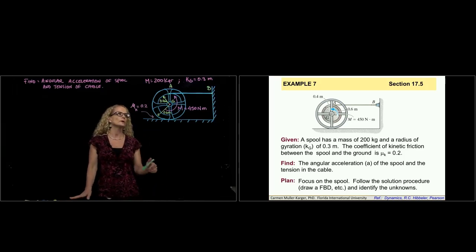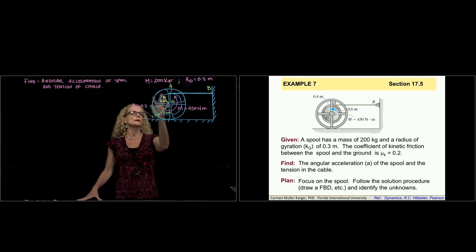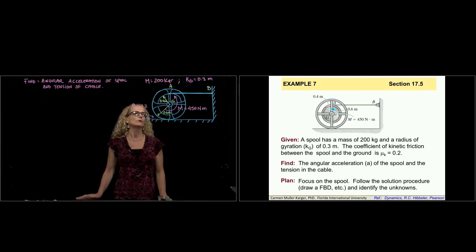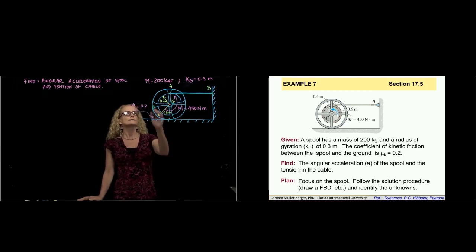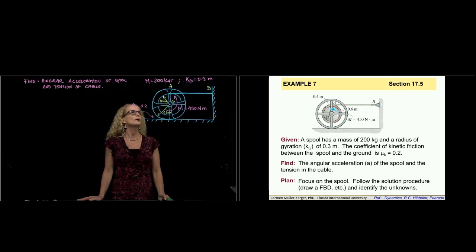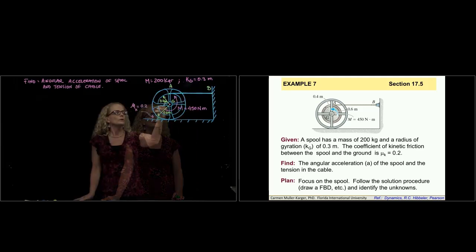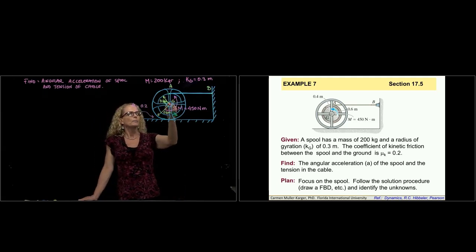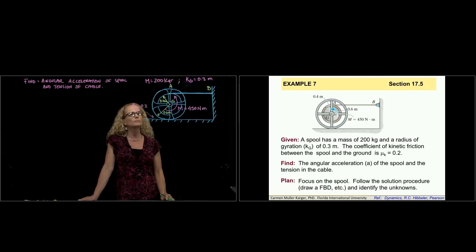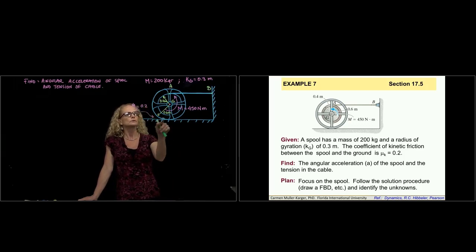So here, as you see in the drawing, we have a spool. This is a wheel, but it's not homogeneous. It has a mass of 200 kilograms and a radius of gyration of 0.3 meters. A moment is applied about the center of gravity, which is in the middle, of 450 Newton meters, and we have friction between the spool and the floor.